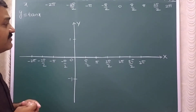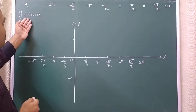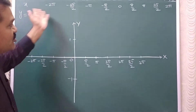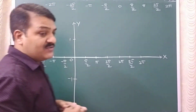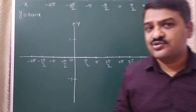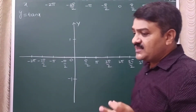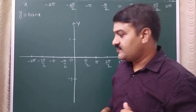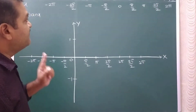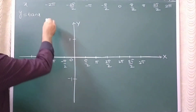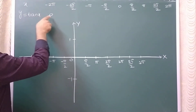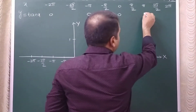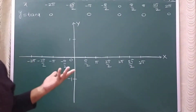So let us consider the graph of y = tan x. We choose x values like minus 2pi, minus 3pi by 2, and so on up to 2pi, and find the corresponding values of y. We know that the tan function is 0 for all multiples of pi. So for minus 2pi, tan x is 0; for minus pi it is 0; tan 0 is 0; tan pi is 0; tan 2pi is 0.